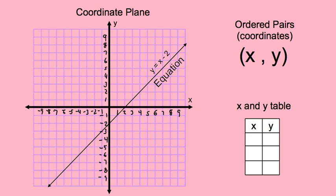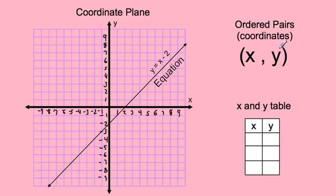Here's our vocabulary for today. We're going to use coordinate planes, and coordinate planes look like this with the x and y axis. On the coordinate plane right here, there's a line that was formed by an equation — this line is y equals x minus 2. We're going to be referencing ordered pairs today, which are coordinates x and y showing where a point is on the coordinate plane, and here's what our x and y table looks like.